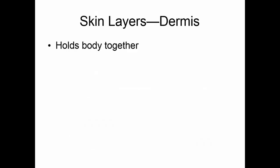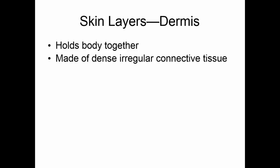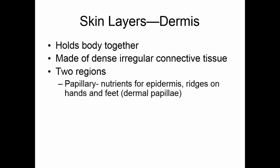The other layer of the skin is the dermis, which literally holds the body together. It's made of dense irregular connective tissue — lots of collagen fibers bundled at different angles, giving us a lot of flexibility, stretch, and toughness. There are two regions of the dermis. The outermost layer is the papillary layer, which supplies nutrients for the epidermis and also has the ridges we see on the hands and feet as fingerprints. These ridges are known as the dermal papillae.